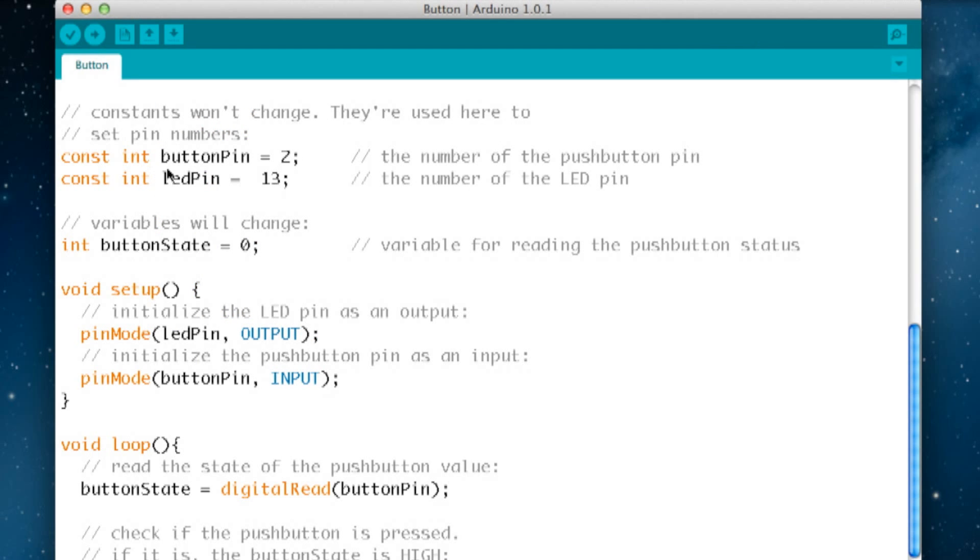It defines two constants which is the button pin 2, which is the input, and the LED pin 13, which is our output. It sets another variable for the state of the button, so first of all we're saying it's zero, so the button is off. In the setup routine it's just initializing the LED pin which we know is pin 13 as output, and it's initializing the input pin which we know is pin 2 as an input.